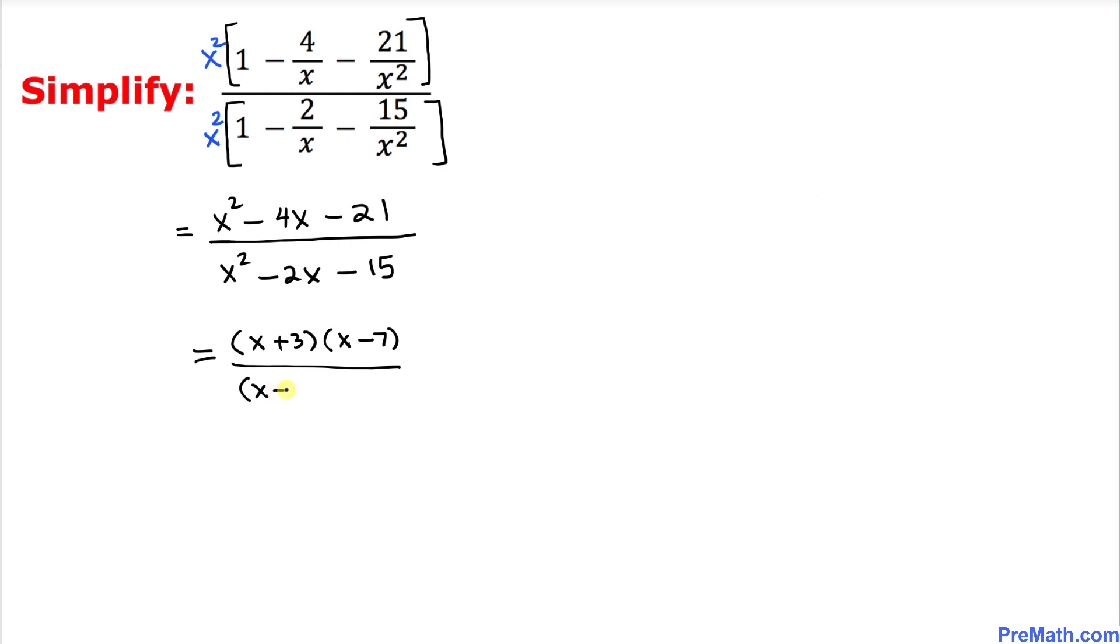And in the next step we can see that this x plus 3 and this x plus 3 cancel out so we simply end up with x minus 7 over x minus 5 as our simplified answer. Thanks for watching and please don't forget to subscribe to my channel for more exciting videos.